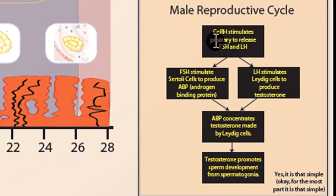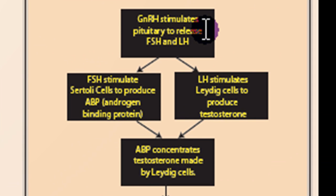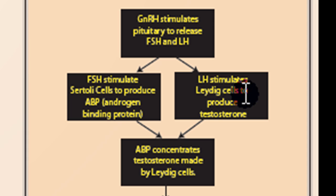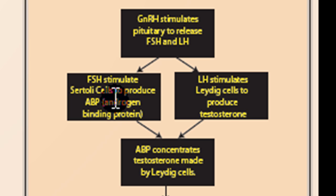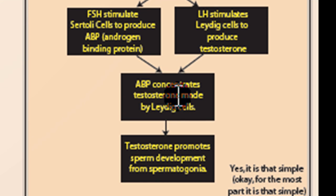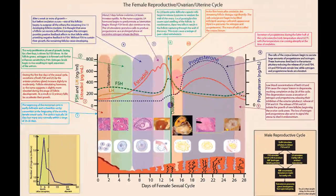The male reproductive cycle is fairly simple and uses the same hormones. Gonadotropin-releasing hormone stimulates the pituitary to release FSH and LH, and those act on two separate cells. Luteinizing hormone stimulates a Leydig cell to make testosterone. Follicle stimulating hormone stimulates a Sertoli cell, which produces androgen binding protein. Androgen binding protein catches testosterone as it circulates through the blood and allows it to concentrate, and this concentrated testosterone promotes sperm development called spermatogenesis. You can insert your own joke about how much simpler the male reproductive system is — but I really find the female reproductive system amazingly complex, a wonderful example of the complexity of the endocrine system.